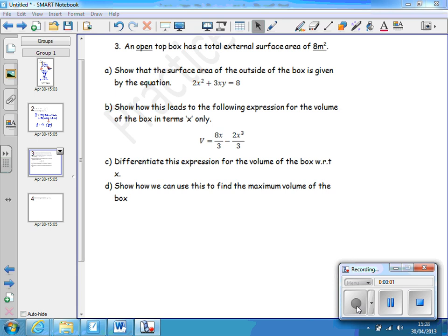This is question number three. An open top box has total external surface area of 8 square meters. Show that the surface area of the outside of the box is given by that equation: 2x squared plus 3xy equals 8.